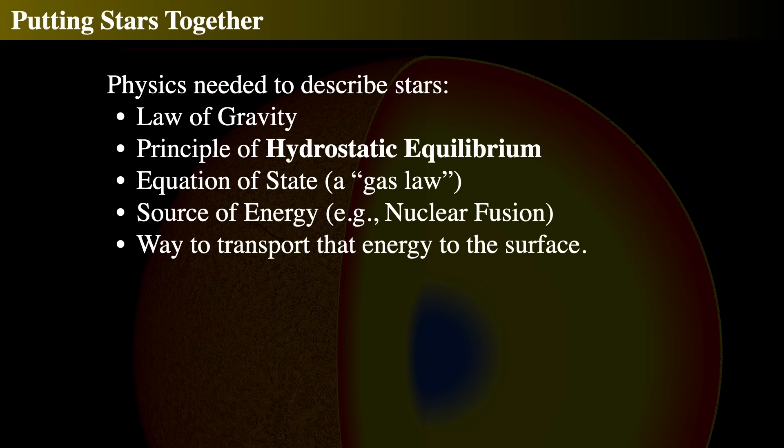The convection zone is where energy is transported primarily through bubbles of gas that are hotter and then rise through, and the radiation zone is where energy is transported via radiation. So let's actually look at the interior of the Sun, way deep in the core. In order to understand what is down there, we have to rely on a lot of physics.